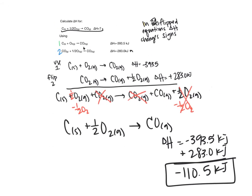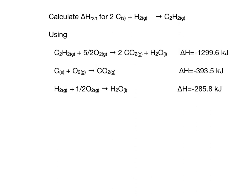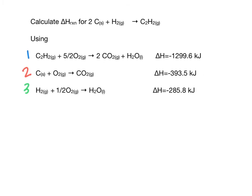So in this case, we learned that if you flip an equation, the delta-H is just going to be the equal and opposite sign. Let's look at another reaction where we're going to calculate delta-H reaction for two carbons plus H2 gas goes to C2H2 gas. We've provided three equations that I'm going to label in colors 1, 2, and 3. When we talk about what we're doing to these equations, you can easily reference that.